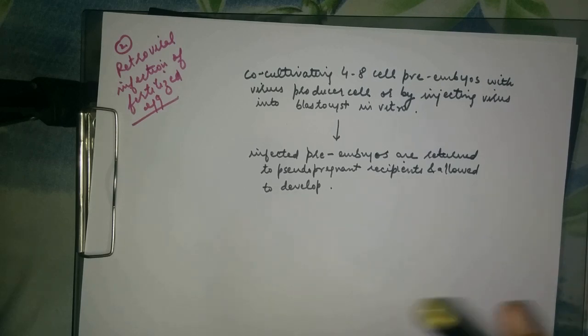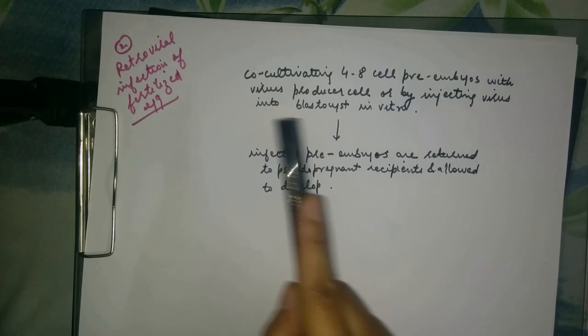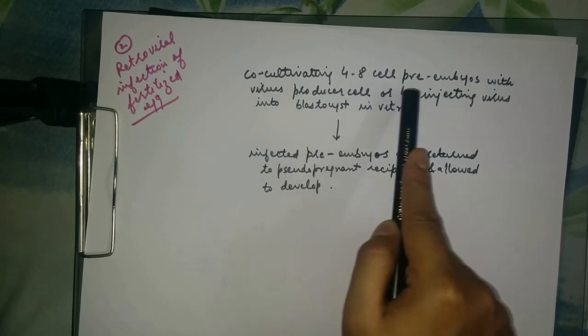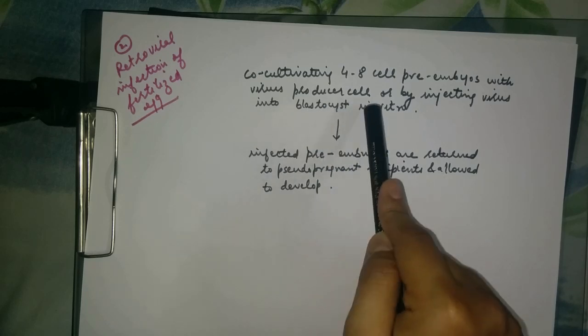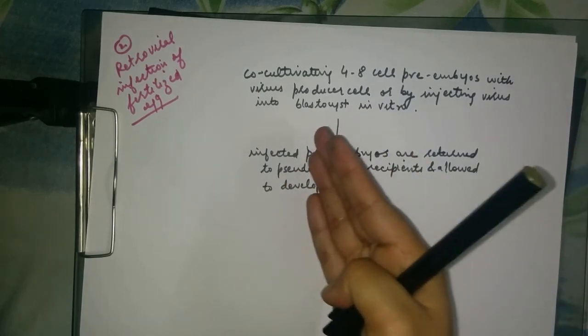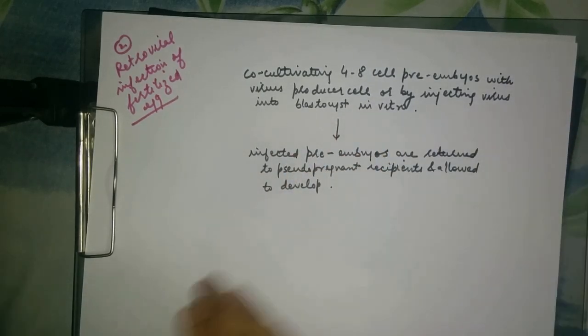The offspring obtained from this method are chimeric, that is, not all cells carry the retrovirus. The transmission of the gene is possible only if the retrovirus integrates into some of the germ cells. The procedure is co-cultivation of four to eight cell pre-embryos with the virus producer cells, or by injecting the virus into the blastocyst.